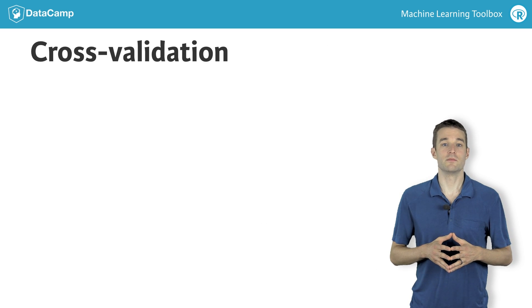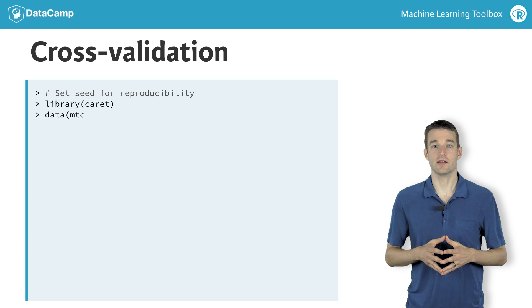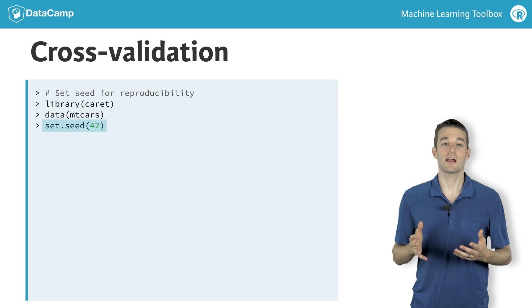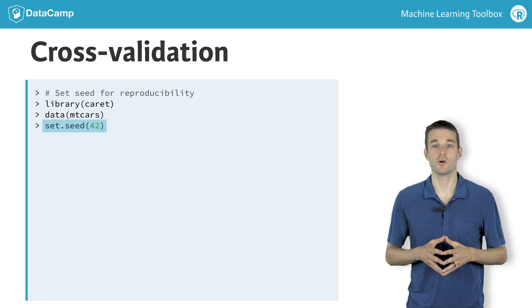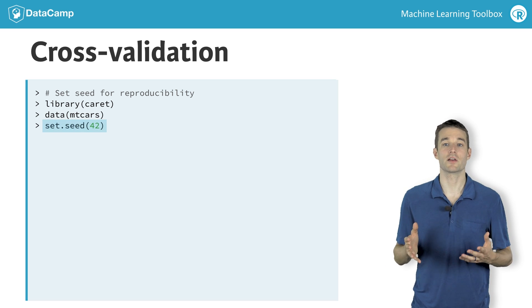Let's fit a cross-validated model to the mtcars dataset. First, we set the random seed since cross-validation randomly assigns rows to each fold and we want to be able to reproduce our model exactly.